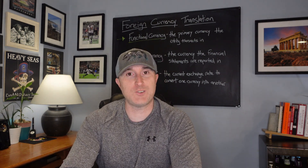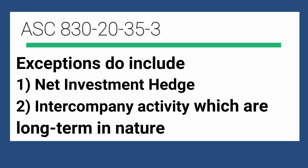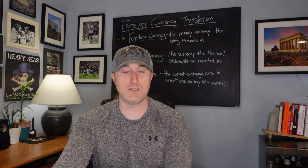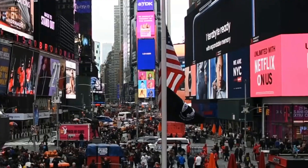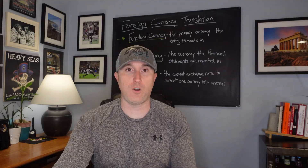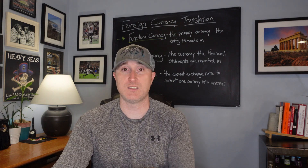With foreign currency transactions, you're going to end up in one of two scenarios. One, the foreign currency translation is going to end up on the income statement as a foreign currency gain or loss — for example, where my functional currency is pounds and I bought something in euros. The other scenario is when you're taking the functional currency of an entity and converting it into a reporting currency. If my functional entity is in British pounds and my reporting currency is US dollars, the difference when I convert is a foreign currency translation adjustment, and that goes in other comprehensive income in the equity section — not the income statement.